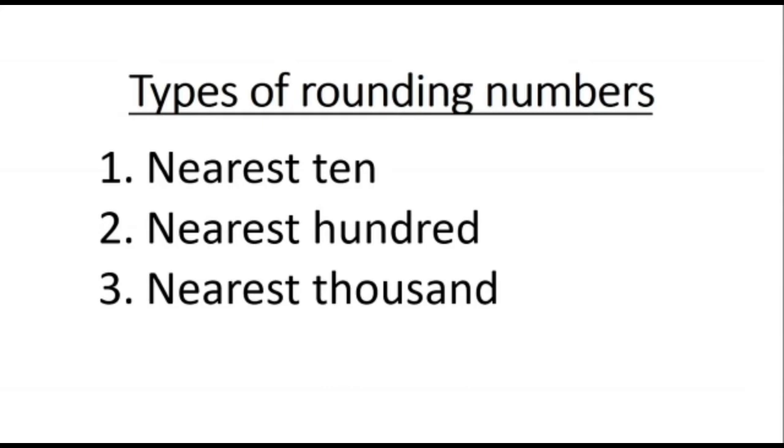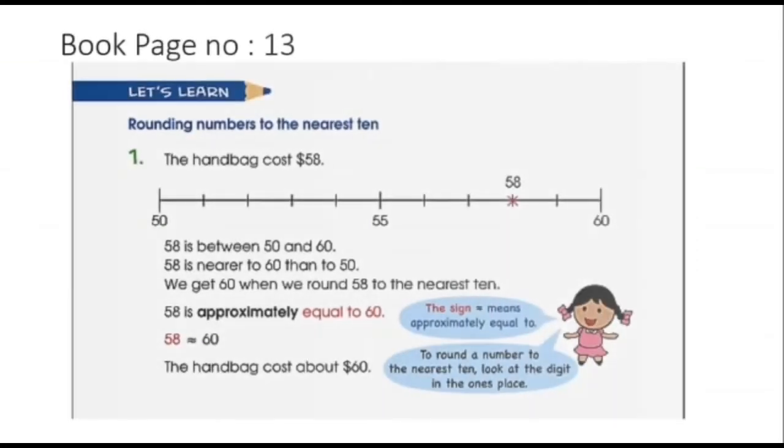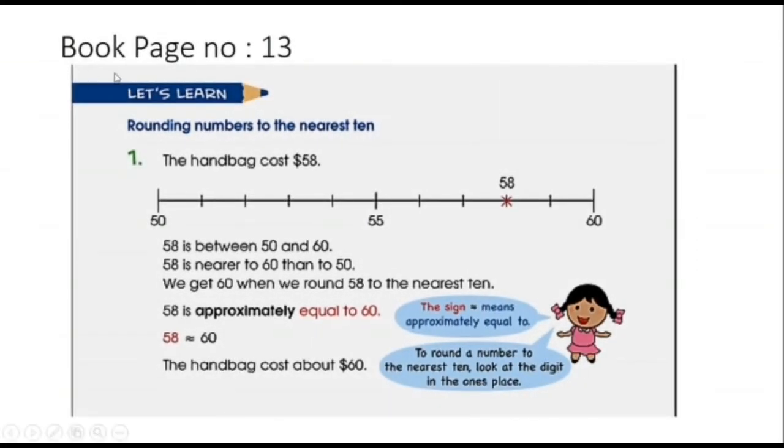Today we are going to learn the first one, which is rounding numbers to nearest ten, from your book page number 13, example number one. The handbag cost dollar 58. This S with a vertical line on it is a sign of dollars, which is an international currency. Now look at this number line. The start number is 50, then 55, 58, and then 60.